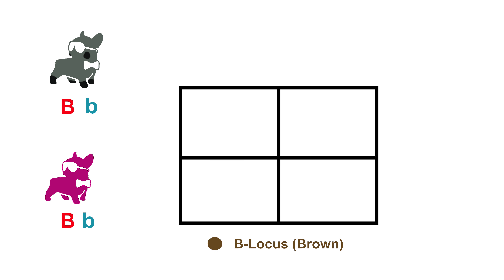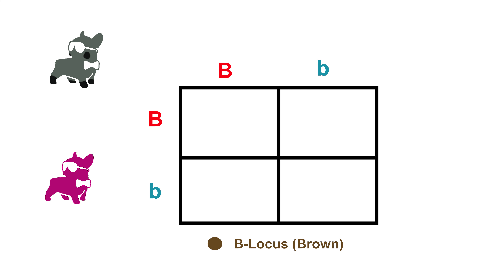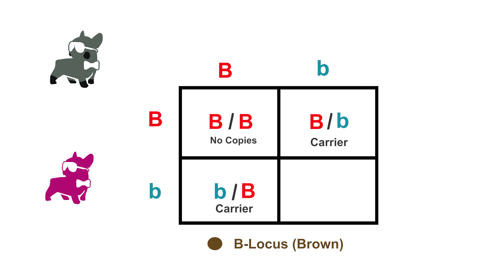We'll start by drawing a grid of four squares and solve the brown gene first. We'll take that gene from dad and separate the letters along the top — capital letter first representing his dominant copy, followed by a small letter representing his recessive copy. We'll do the same with our dam running vertically. Next we'll match the horizontal and vertical intersections: BB, Bb, bB, and bb — which is our only visibly brown dog. We'll have two other carriers and one dog that carries no copies.